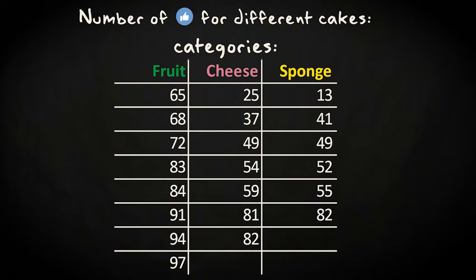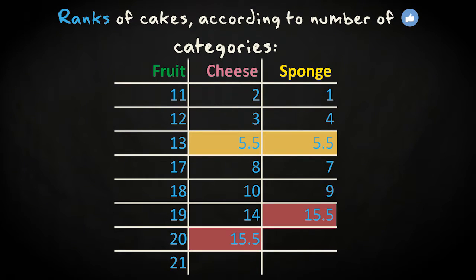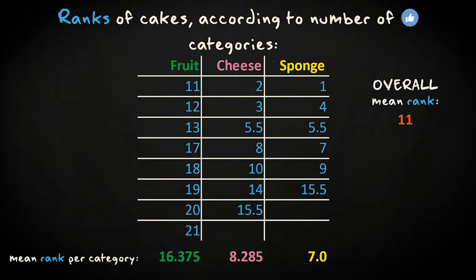These are the scores for the three groups. The ranks for these scores are given here. As you see, there are two ties. Here and there. Next, the mean ranks per group and the overall mean rank is calculated.